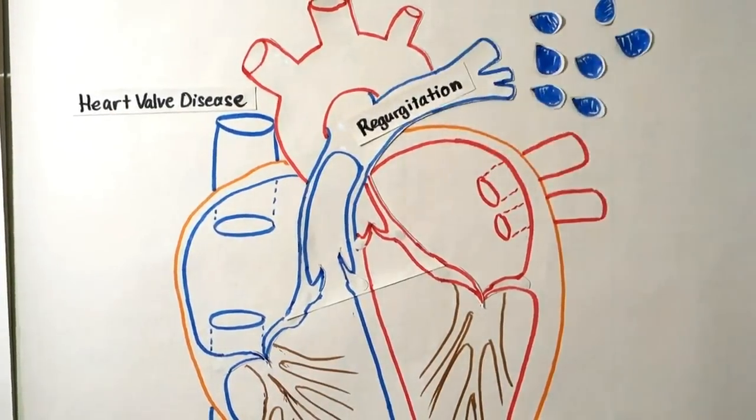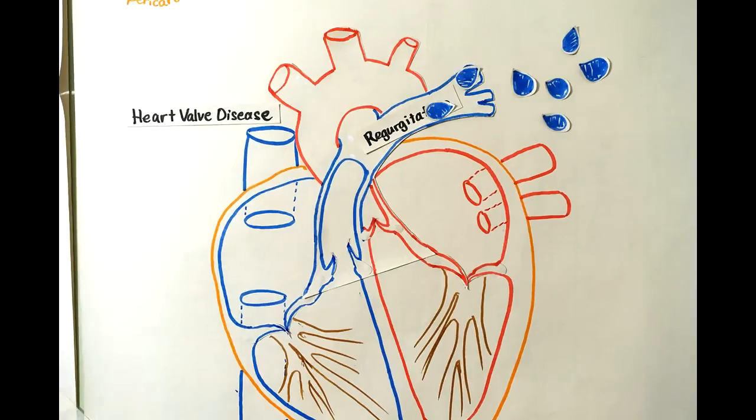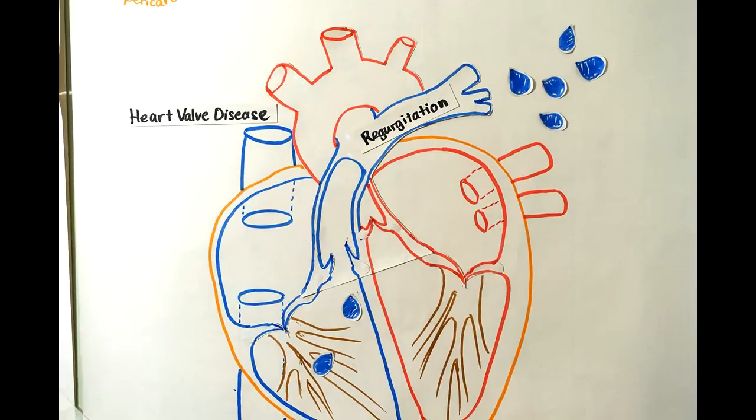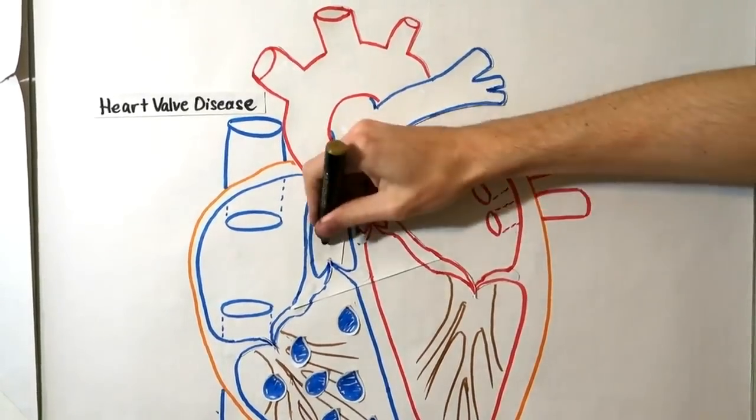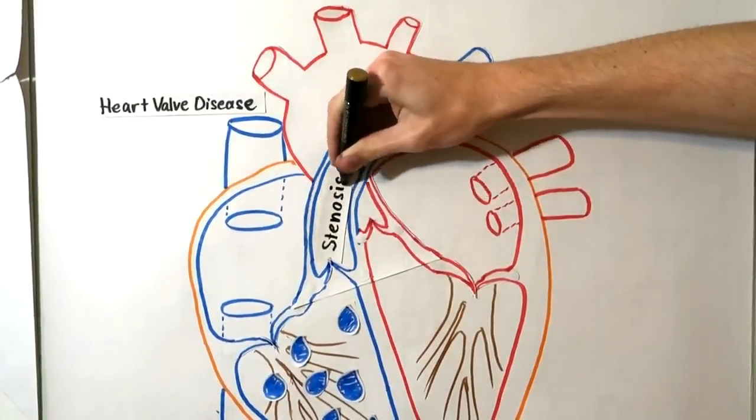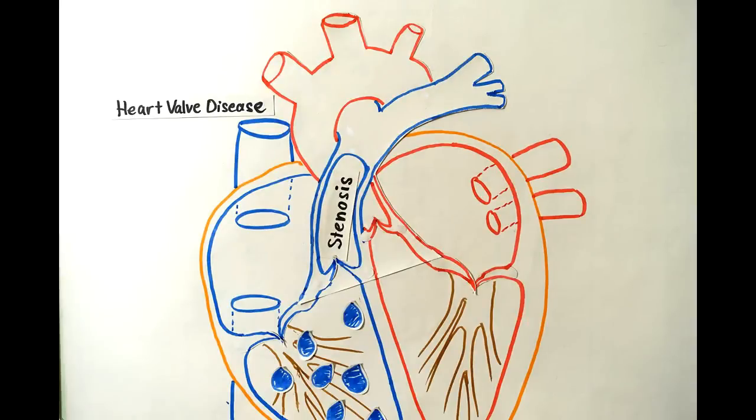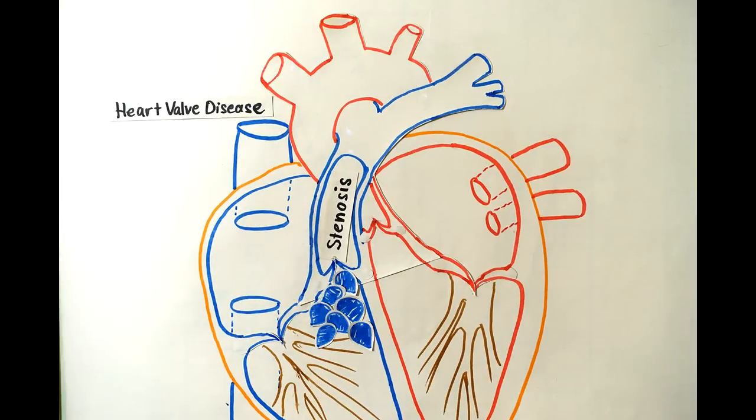Regurgitation occurs if a valve doesn't close tightly. Blood leaks back into the chambers rather than flowing forward through the heart or into an artery. Stenosis occurs if the flaps of a valve thicken, stiffen, or fuse together, preventing the heart valve from fully opening. As a result, not enough blood flows through the valve.